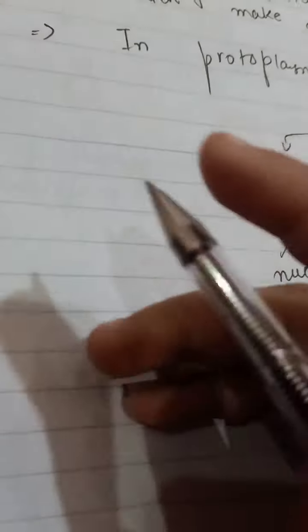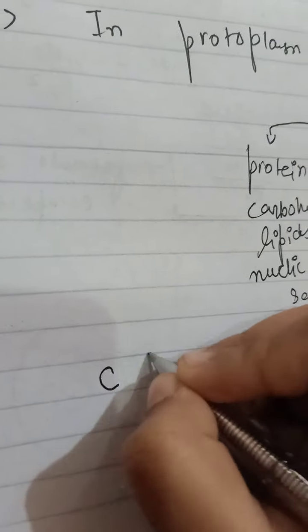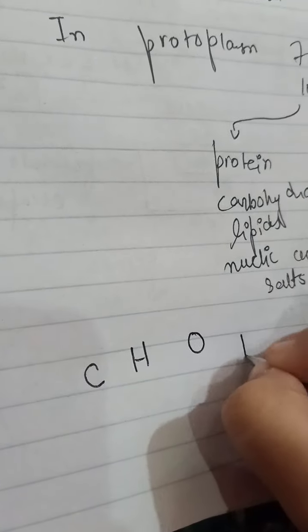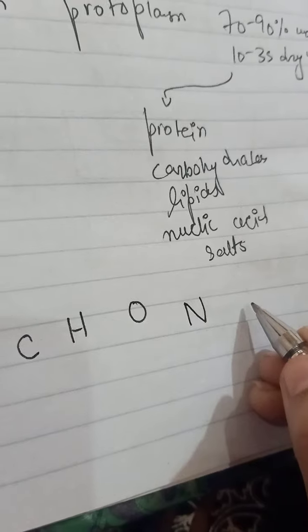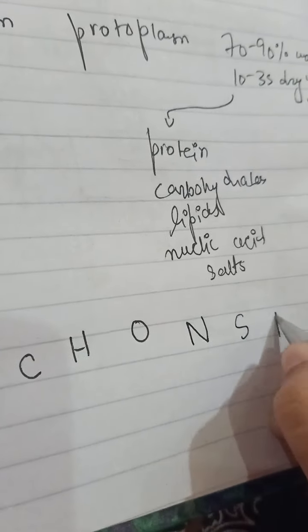Now talking about the bio-elements, there are six bio-elements: carbon, hydrogen, oxygen, nitrogen, and sometimes sulfur or sometimes calcium. So here I am writing sulfur and potassium.